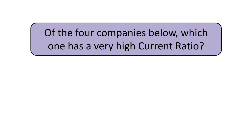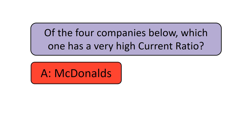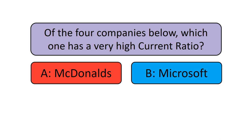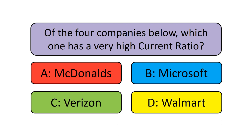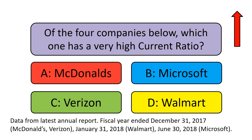Of four companies — McDonald's, Verizon, Walmart, and Microsoft — which one do you think has a very high current ratio? I have used data from the latest annual report at the time of making this video: fiscal year ended December 31st 2017 for McDonald's and Verizon, January 31st 2018 for Walmart, and June 30th 2018 for Microsoft.